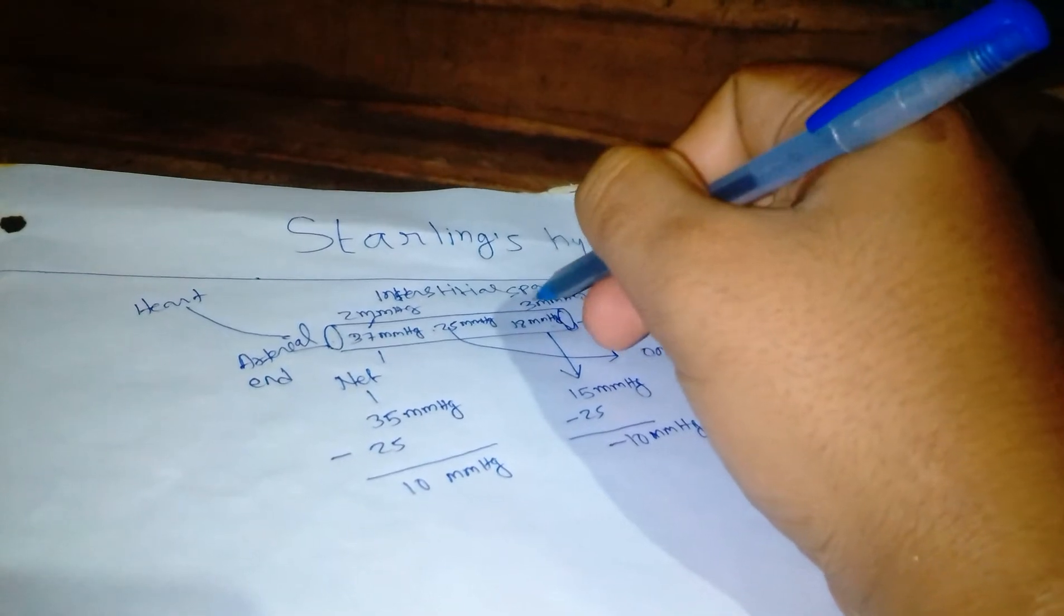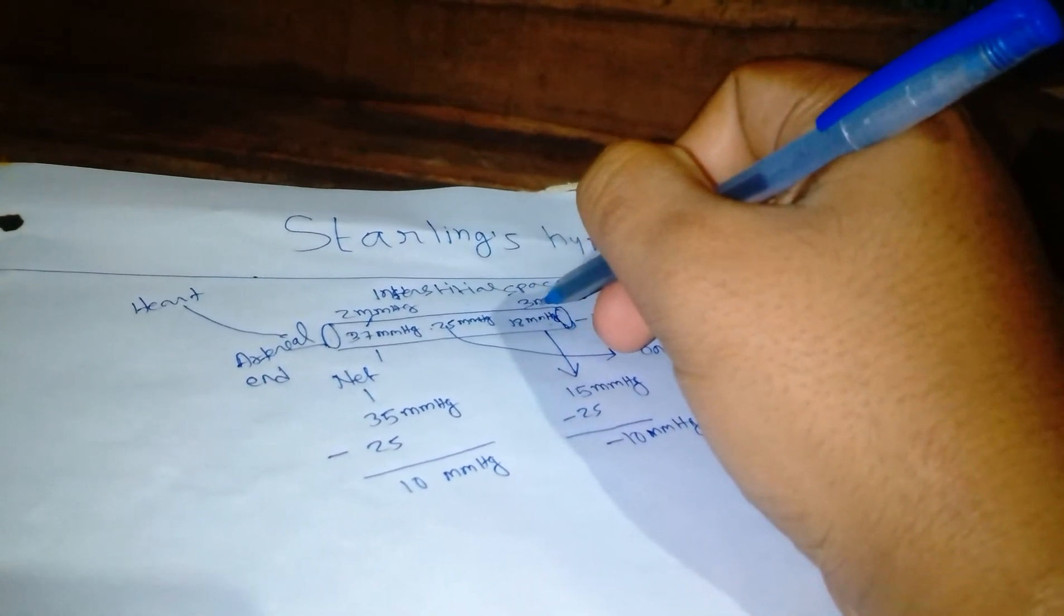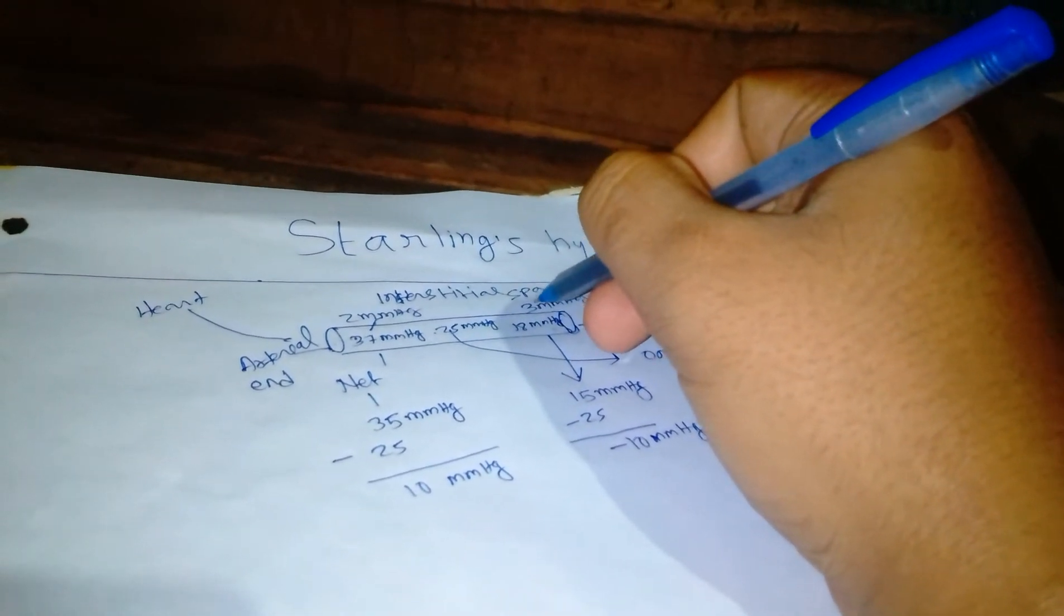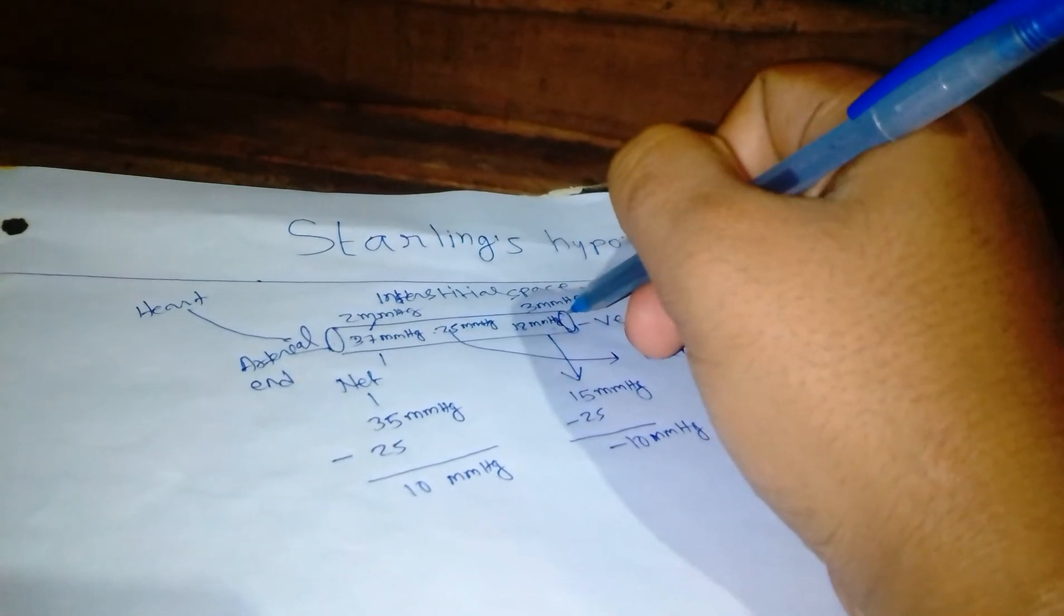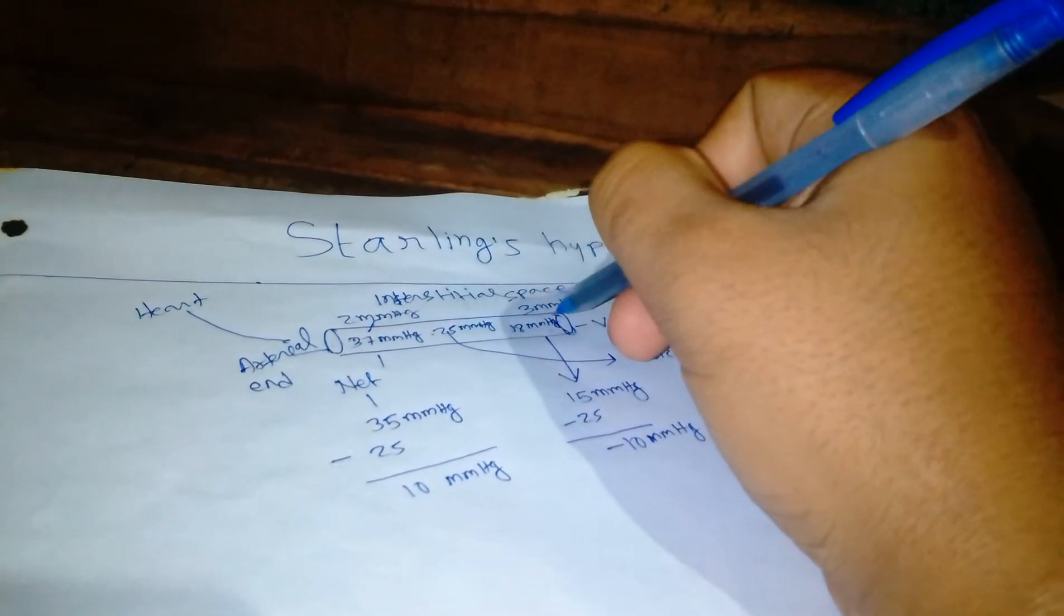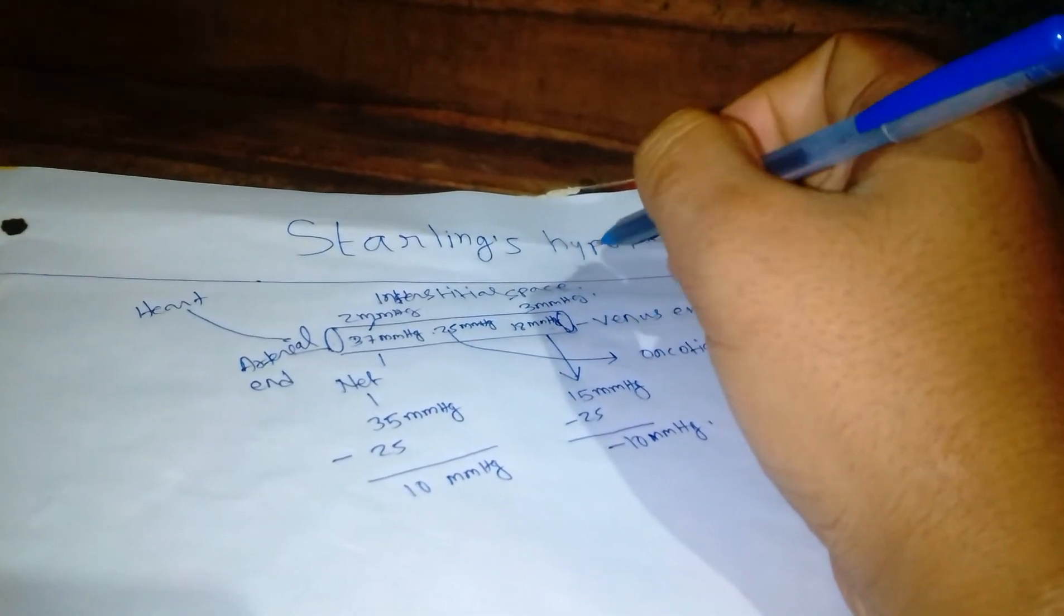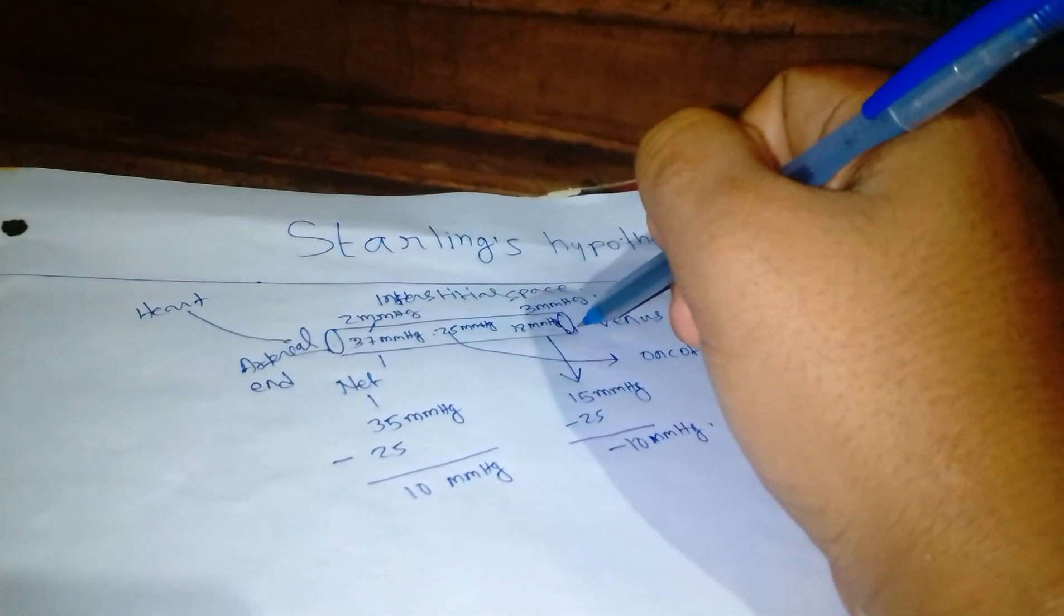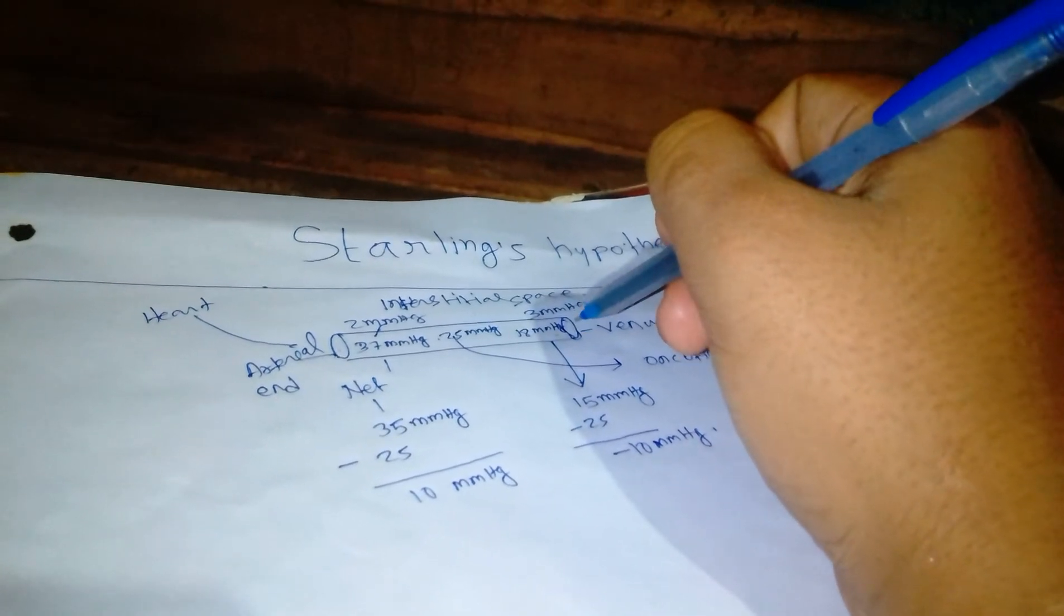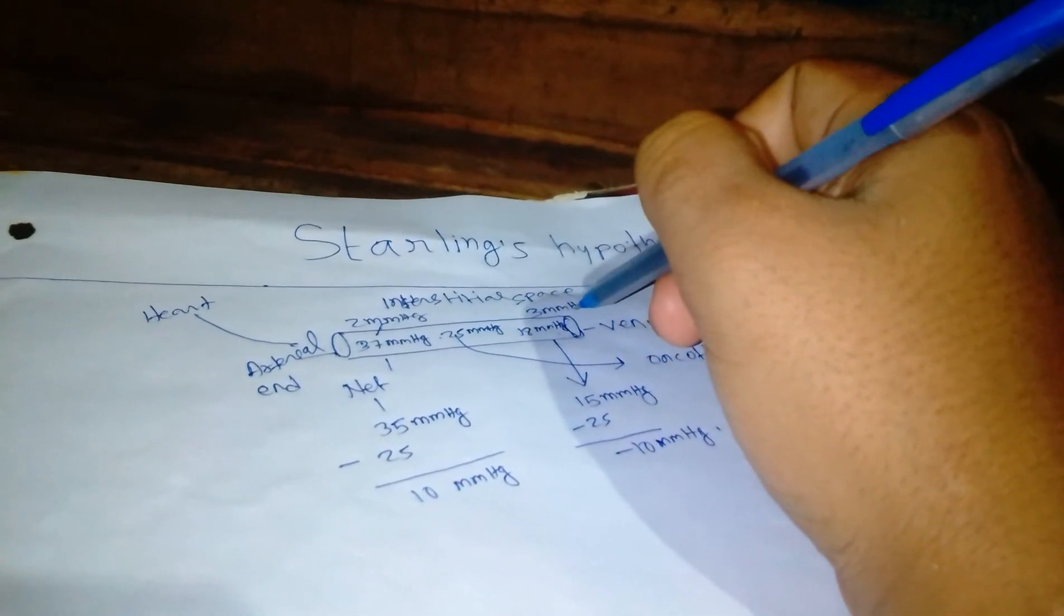And along with the fluid, the metabolic wastes like carbon dioxide and other excretory products will come with the fluid and get into the blood and be taken to the excretory organs like kidney, liver, and lung.